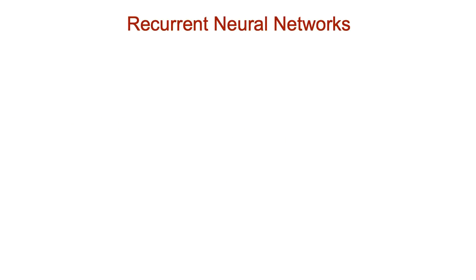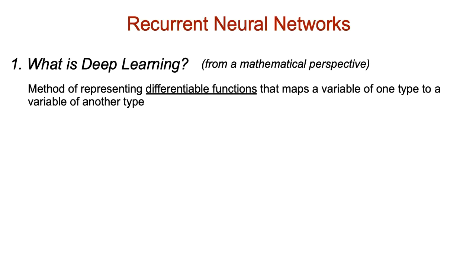Let's first start with the big question. What is deep learning? Now, I'm not talking about the standard wiki definition and its association with machine learning, but more big picture, from a mathematical perspective. Essentially, it is a way of representing differentiable functions that map one kind of variable to another kind of variable. So for example, vector to floating point number in regression or a vector to a vector in classification problems, where the output vector could be probability of belonging to multiple classes.